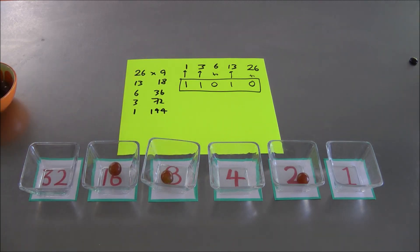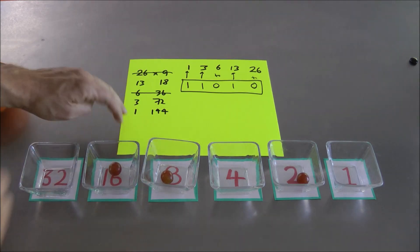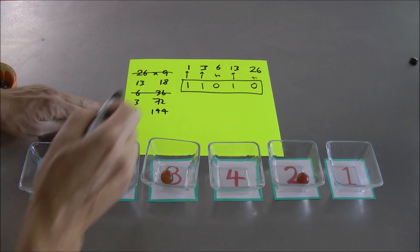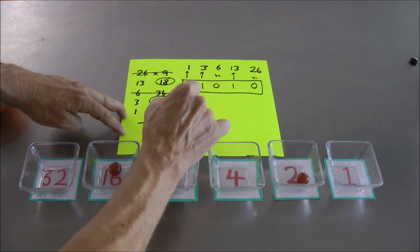Alright. Now, what I'm going to do now is cross out those rows that begin with an even number. Cross out the one that begins with a 6. Cross out the one that begins with a 26. That leaves behind on the right an 18 that survives, a 72 that survives, and a 144 that survives.